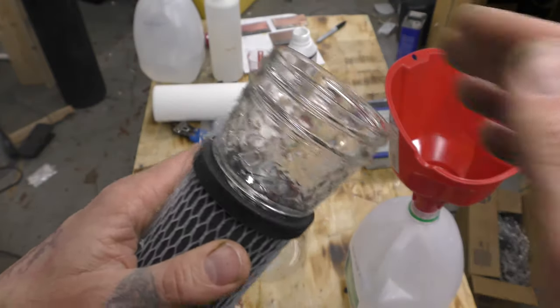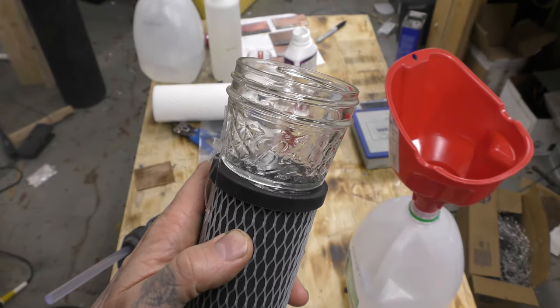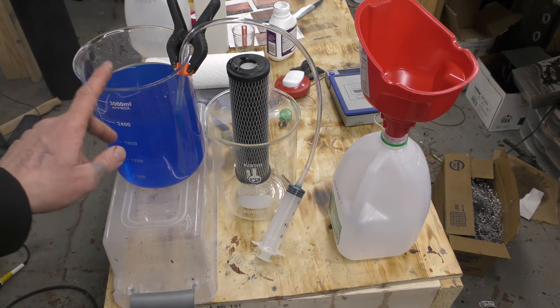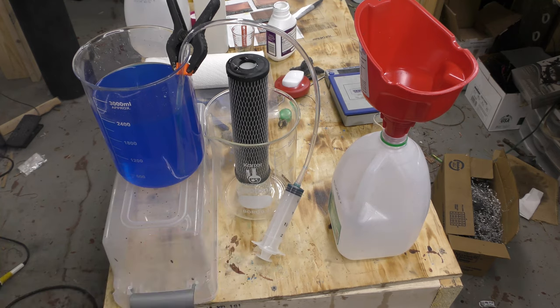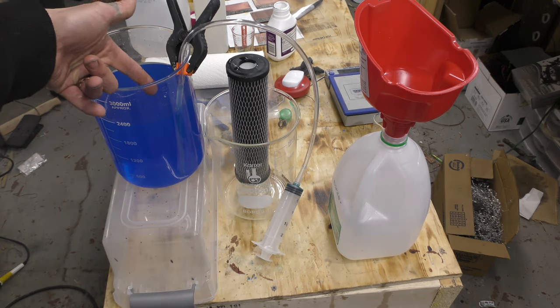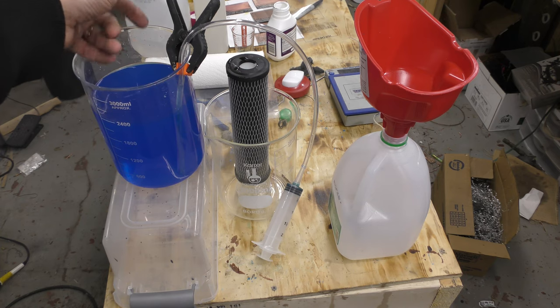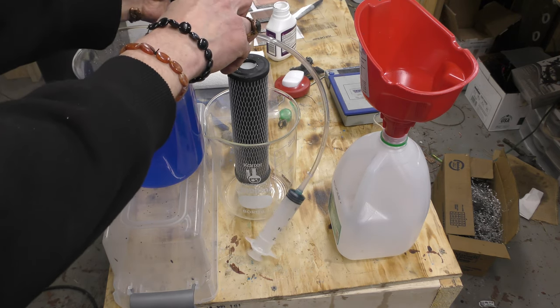Option one: you could pour this into that hole and then it would leak into the vessel. Option two: you can put a vinyl tube, attach that to the side of the vessel.